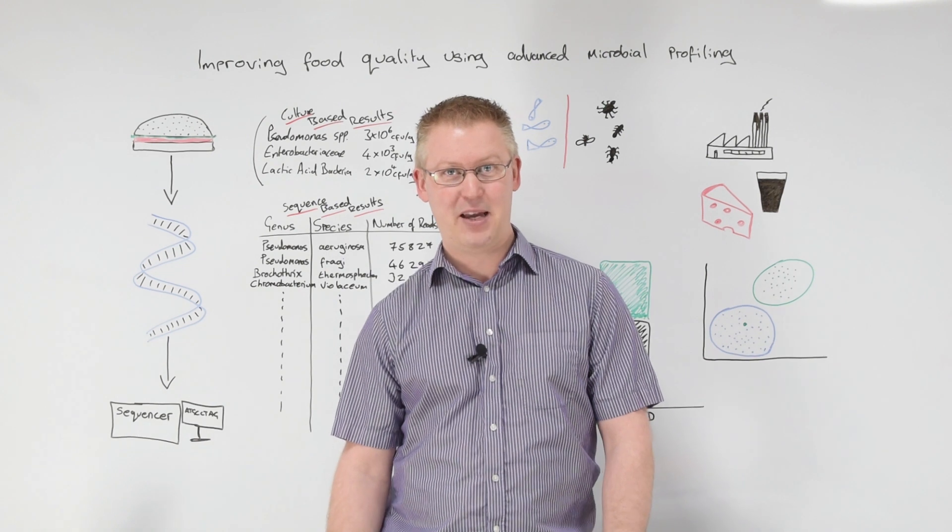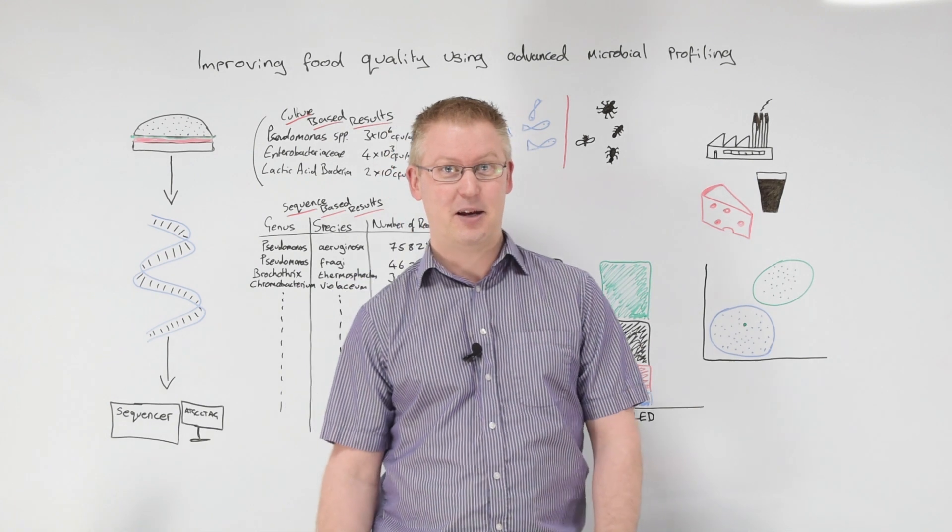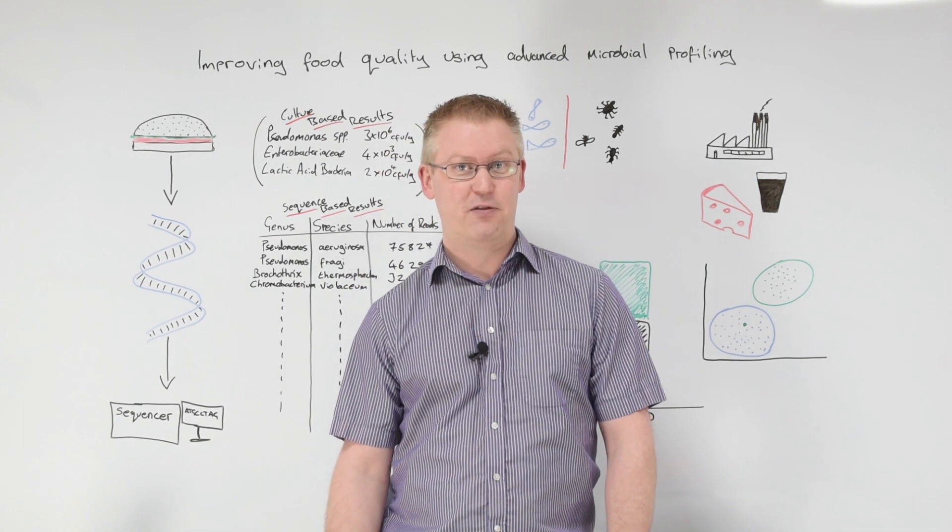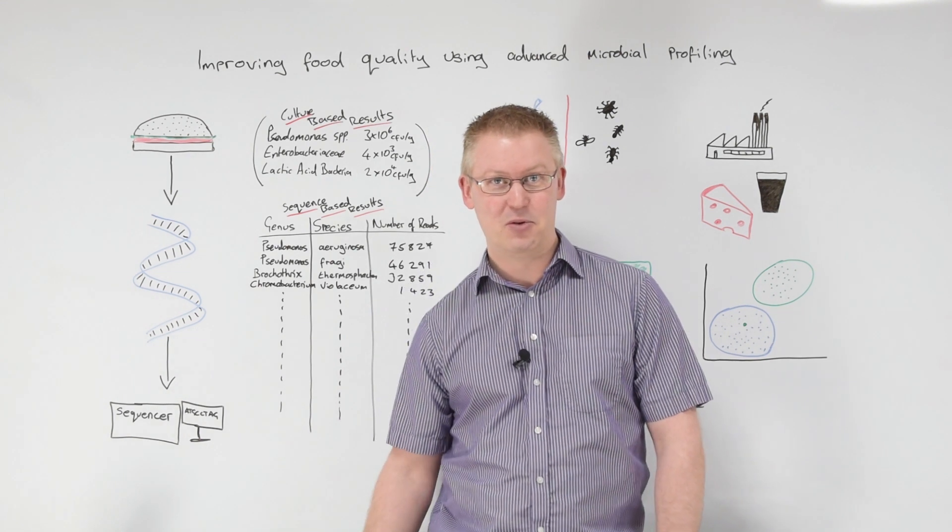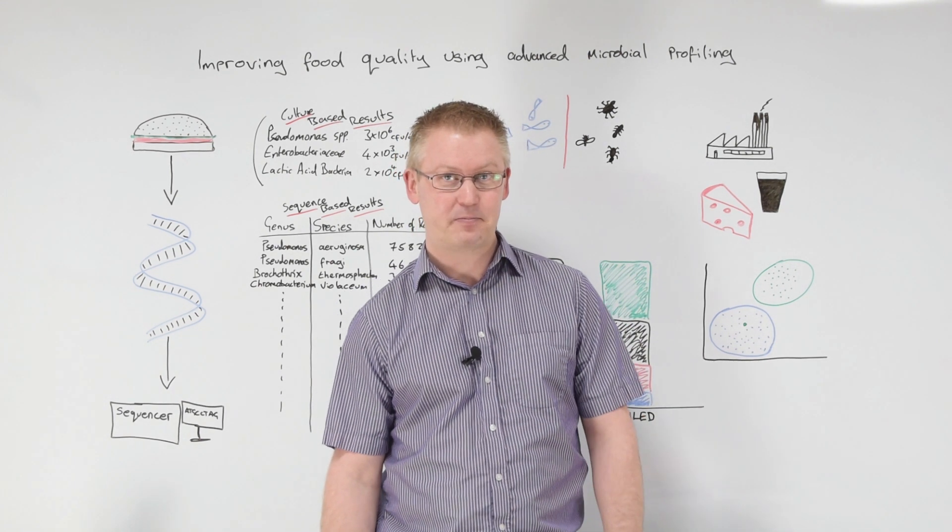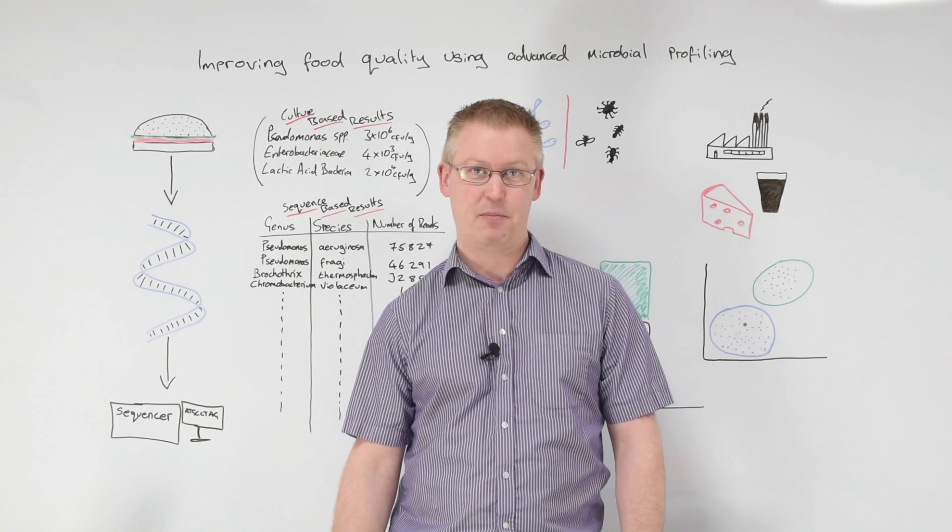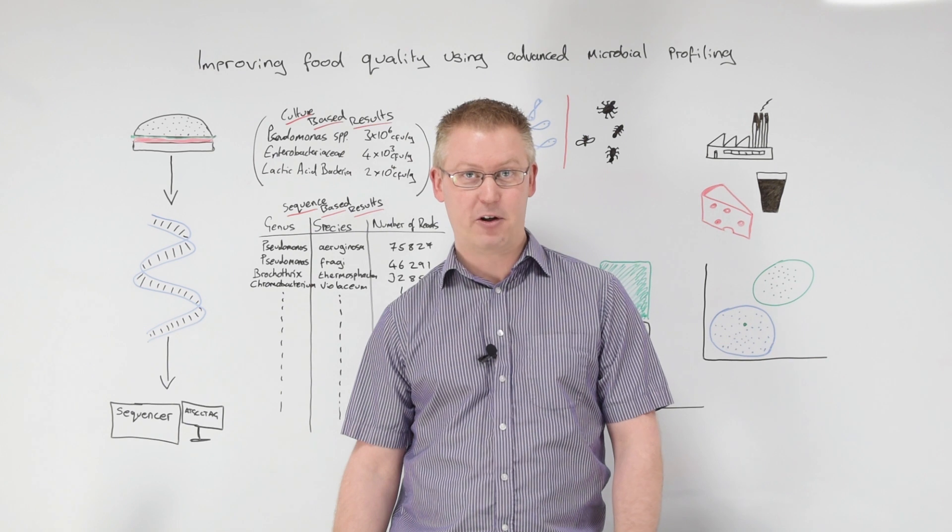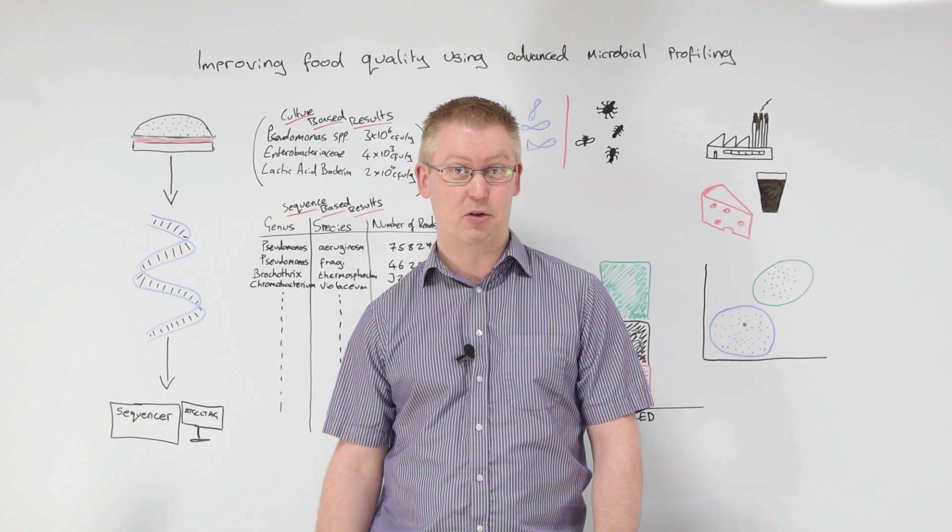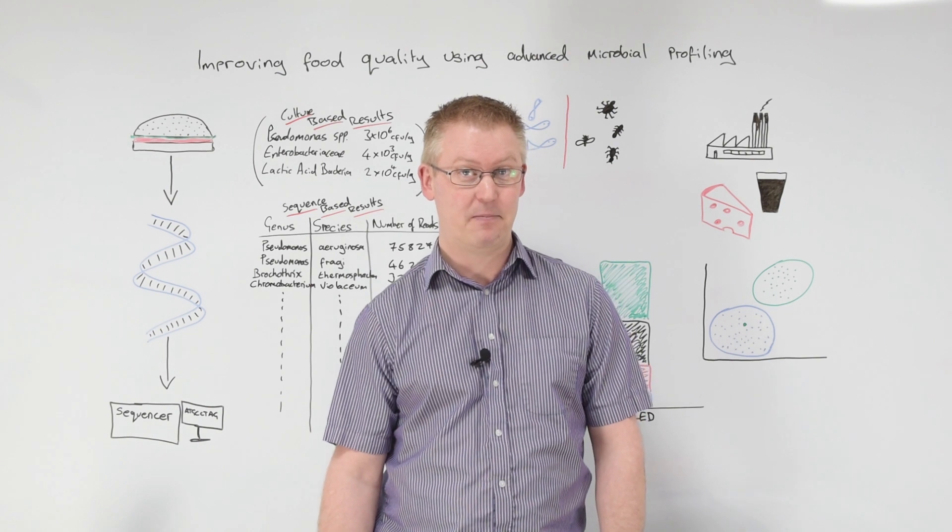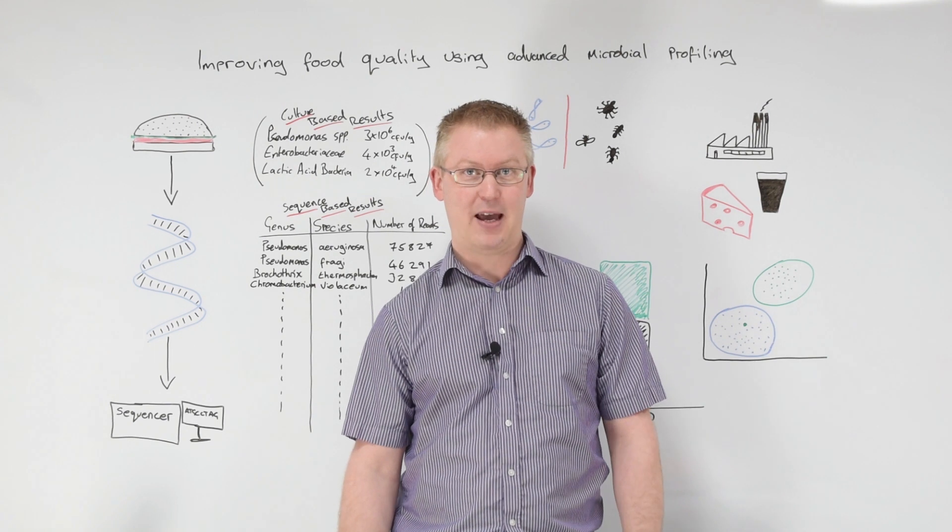And then I introduce another bias by growing those organisms at a certain temperature and further bias by choosing what time I'm going to be keeping those organisms in my incubator. All these biases essentially mean that I'm only looking at a subset of the population of my product. There could well be organisms there which we have basically missed because we weren't expecting them to be there. To get around this, we can use a culture independent method called AMP.